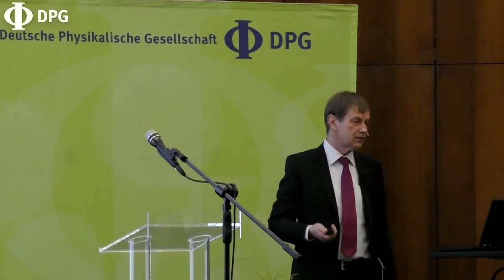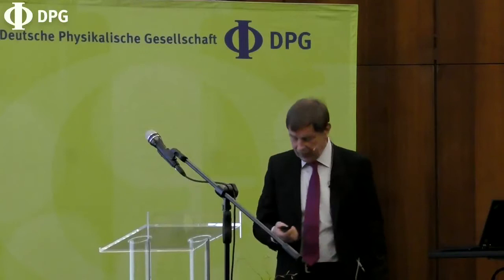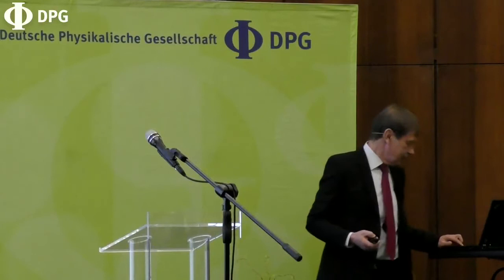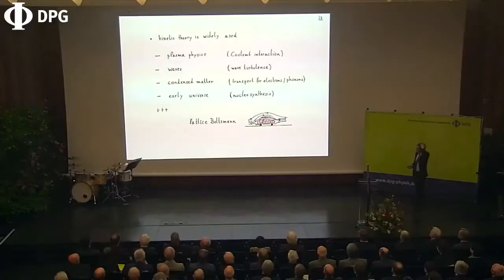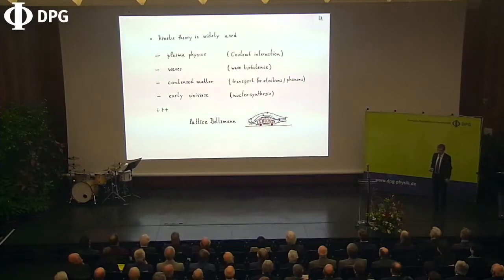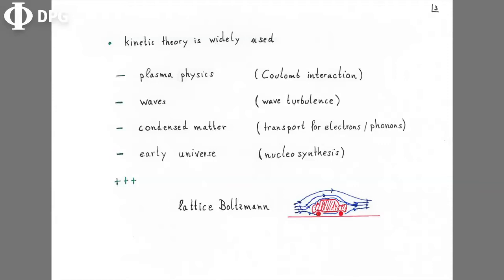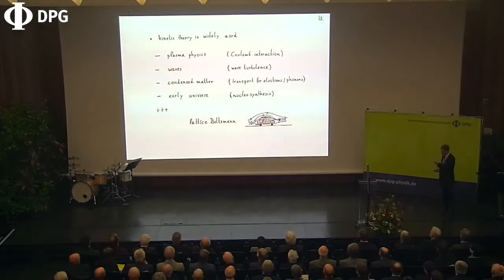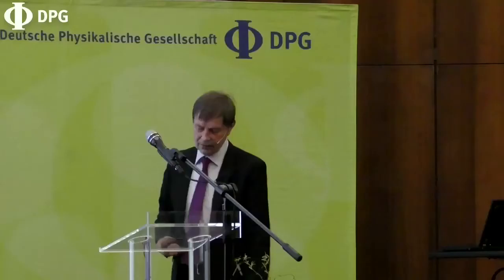Kinetic theory is used widely. You can use it in plasma physics — taking Coulomb interactions into account — in wave turbulence, in condensed matter physics for transport of electrons and phonons. Very sophisticated many-particle methods exist, but to a large extent the bread and butter is often some version of a transport equation with a similar structure to the Boltzmann equation.